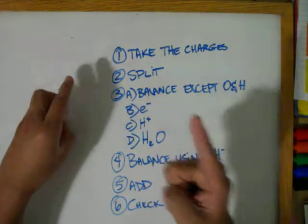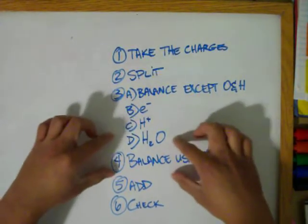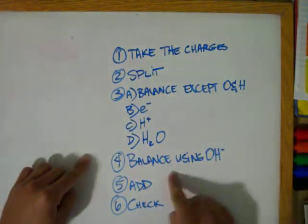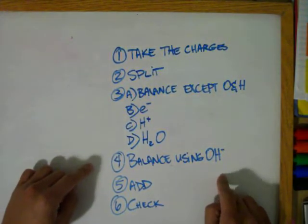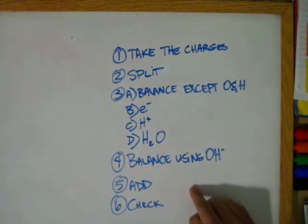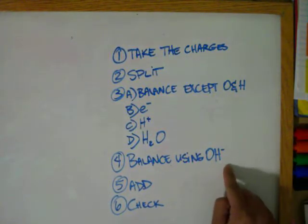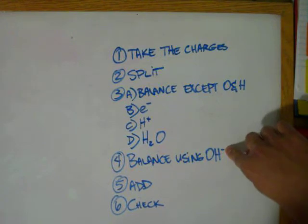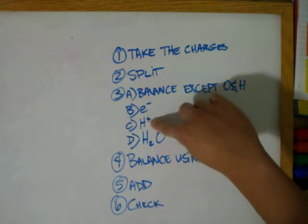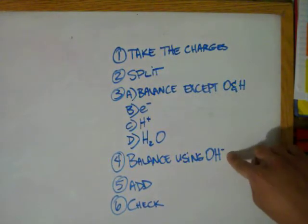But for basic reactions, we use hydroxide ions and cancel out the hydrogen ions using these, because they both have one charge - this has a plus one and this has a minus one.